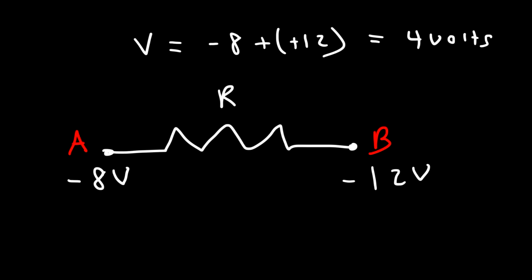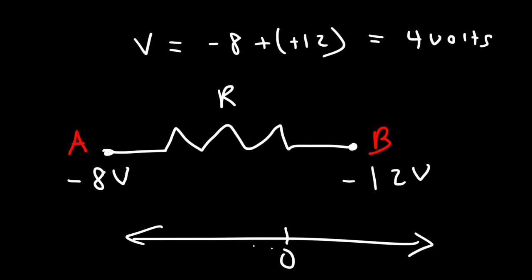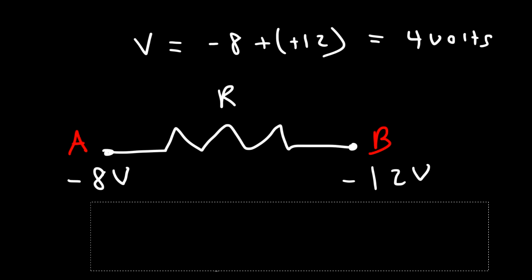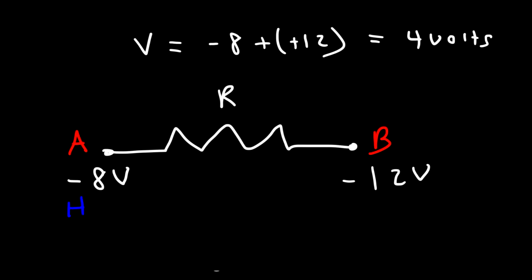Which has a higher potential — negative 8 or negative 12? If you place these on a number line, negative 8 is to the right of negative 12. Numbers to the right on a number line have a higher value, so negative 8 is higher than negative 12. Therefore A is at a higher potential and B is at a relatively lower potential, so the current flows from A to B — from high potential to low potential.